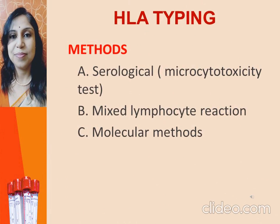For HLA class 1 typing, the following tests are used: cytotoxic test (serological), CML test (cellular), 1D-IEF (biochemical), and DNA-based methods including RFLP, SSO, SSP, PCR and SBT. For HLA class 2 typing, cytotoxic test, MLC (serological), and DNA-based methods including RFLP, SSO, SSP and PCR are used. DNA methods represent the modern trend in HLA typing and will probably replace a large part of other HLA typing techniques.